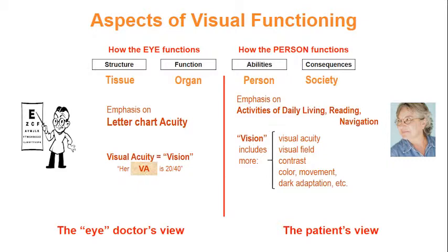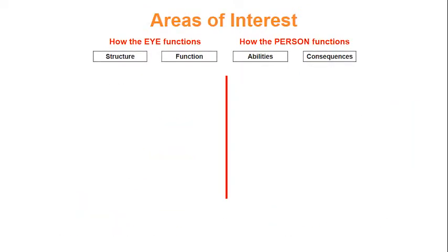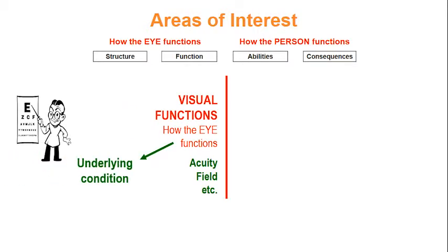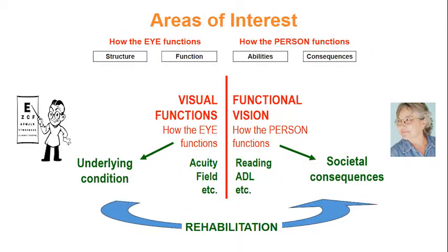One thing the eye doctor must learn is that normal letter chart acuity does not mean there are no vision problems. On the patient side, we are not done when we normalize her eyes — we must also provide coping skills and tools. Not only do the left and right side differ in their emphasis, they also differ in their objectives. When measuring how well the eyes function, the objective is to learn more about the underlying condition. When measuring how well the person functions, the objective is to learn more about the societal consequences. Rehabilitation provides a link between these two aspects.